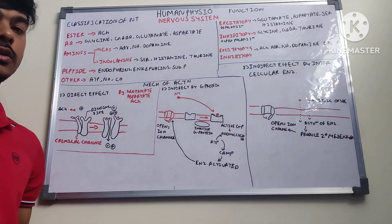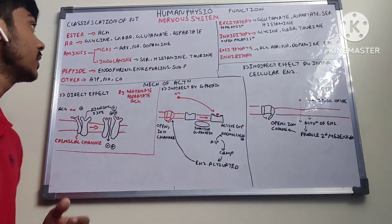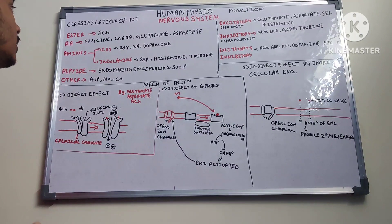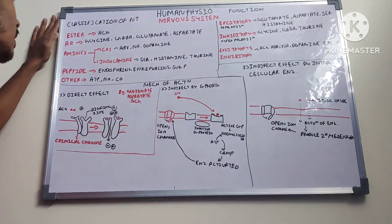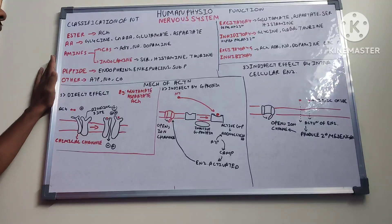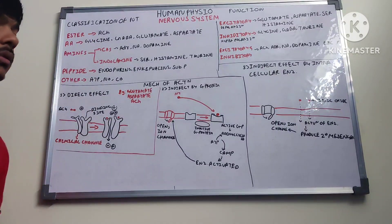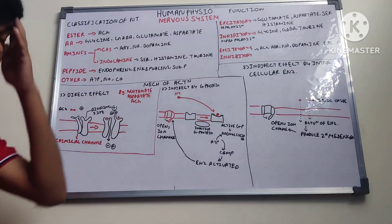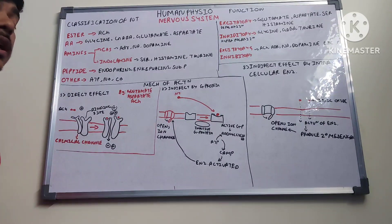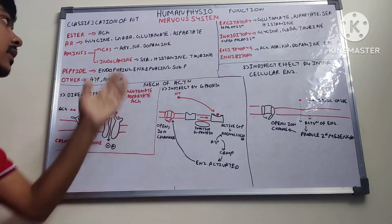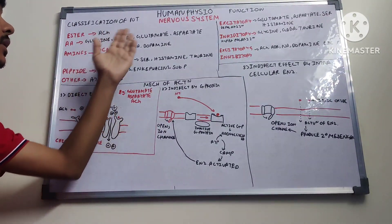Now let's continue with the classification of neurotransmitters based on their chemical nature and function. We have ester type, amino acids, amines, peptides, and miscellaneous neurotransmitters. The ester type is acetylcholine, which is degraded by the enzyme acetylcholinesterase. Amino acid neurotransmitters include glycine, GABA (gamma-aminobutyric acid), glutamate, and aspartate.